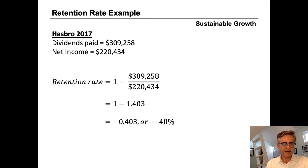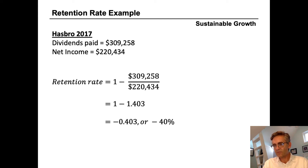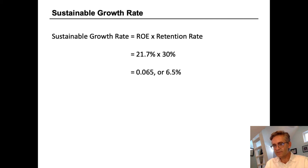What may have happened is that Hasbro's income declined significantly in one year, but they didn't reduce their dividend payout. So when the retention rate is less than zero, as is the case with Hasbro here, it means they're paying out more than they're earning. While it's not unusual, it's also not sustainable — either the dividend will be cut or earnings will increase; it has to be one or the other. This condition cannot persist over the long term because a company cannot continually pay out more than it earns. Going back to the sustainable growth rate formula — return on equity times the retention rate — for Hasbro in 2017, the return on equity is 21.7% times a 30% retention rate, giving a sustainable growth rate of 6.5%.